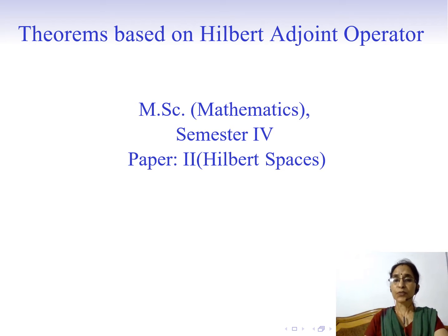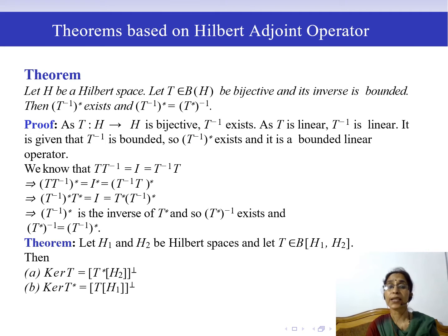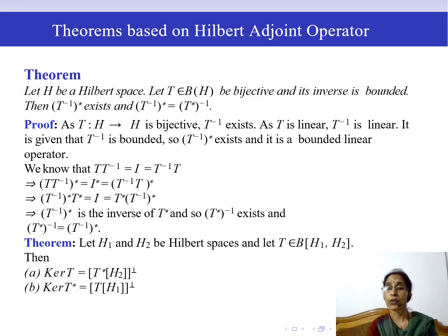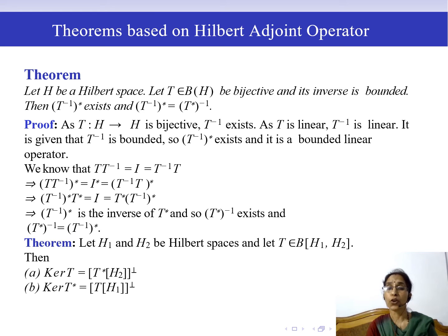Today's topic is theorems based on the Hilbert adjoint operator. The first theorem states: let H be a Hilbert space and let T belong to B(H), where T is a bijective bounded linear operator from H to H whose inverse is bounded. Then we have to show that T inverse star, the Hilbert adjoint of T inverse, exists and T⁻¹* = (T*)⁻¹.